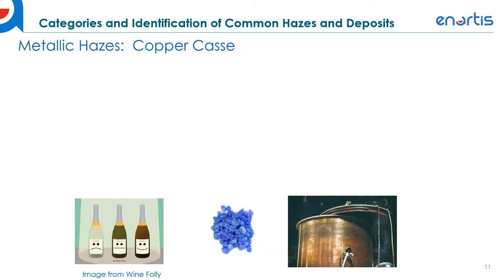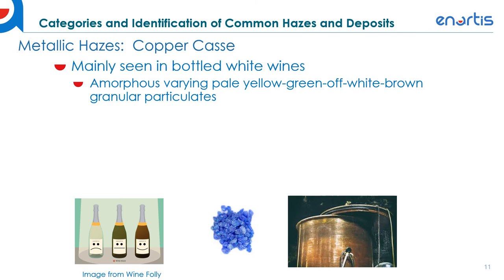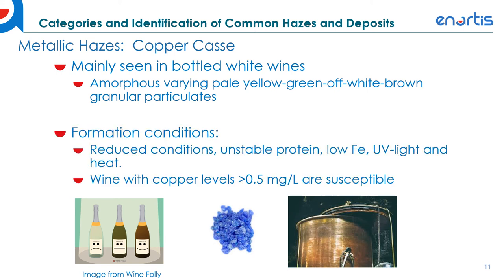Now on to copper casse. We mainly see this in white wines. It comes off as an amorphous deposit with varying pale yellow, green, off-white, and brown granular particulates. Its formation conditions require reduced conditions, which is why we often see it after bottling. It also requires unstable protein, low iron, UV light exposure, and heat. Wines with copper levels greater than 0.5 mg/L are considered susceptible.